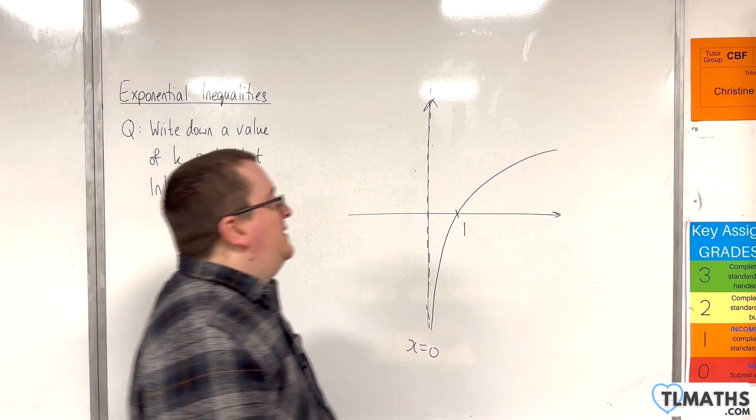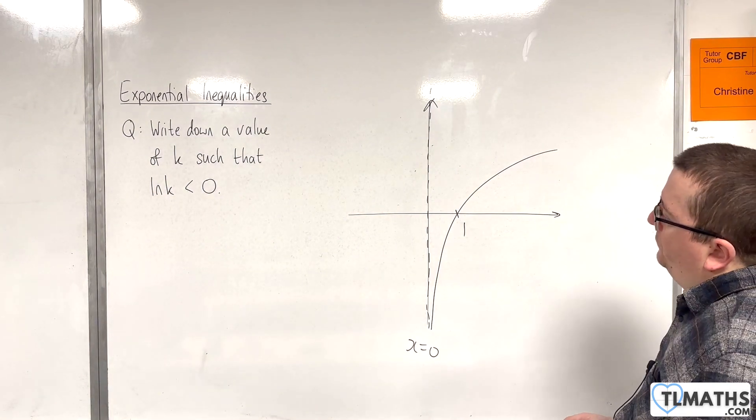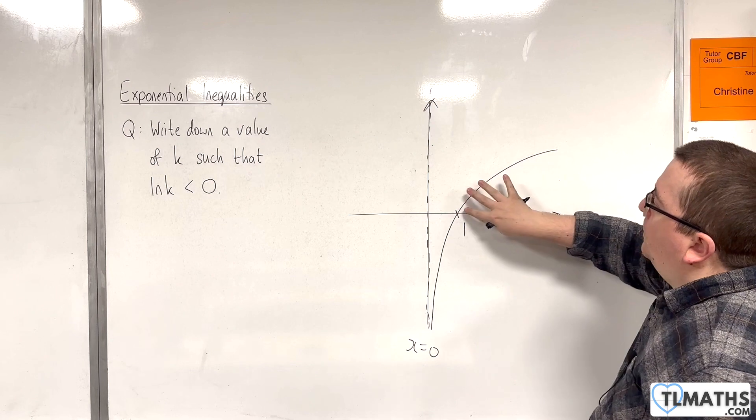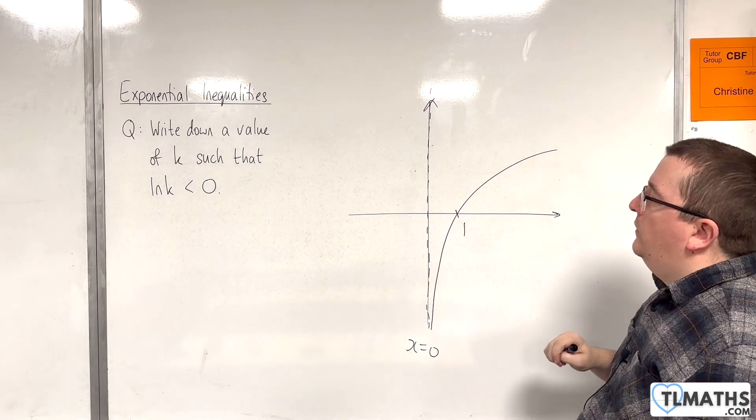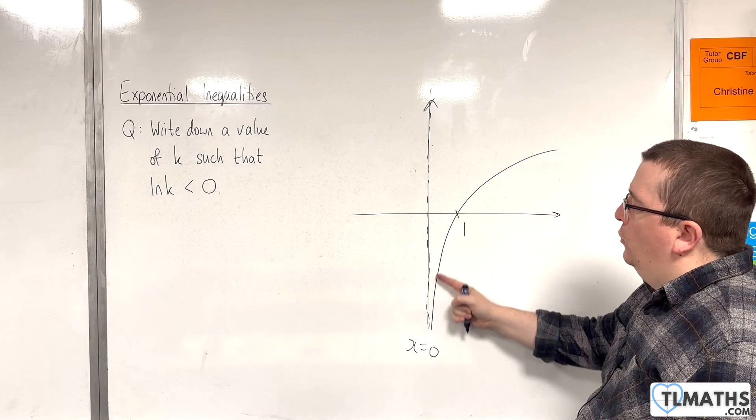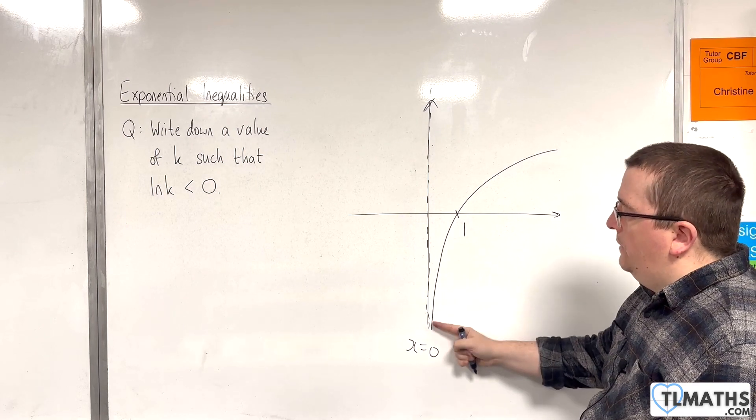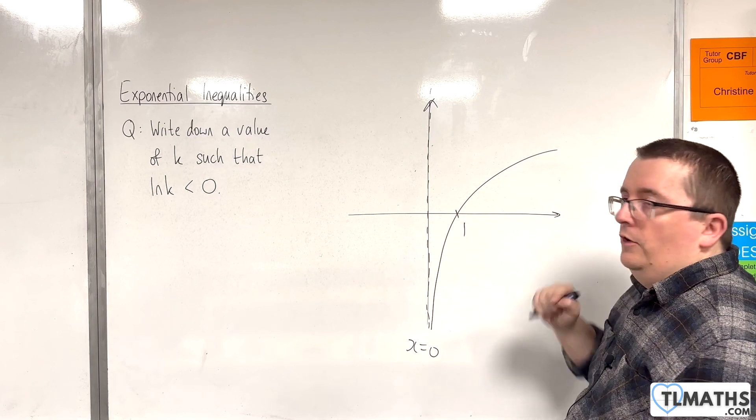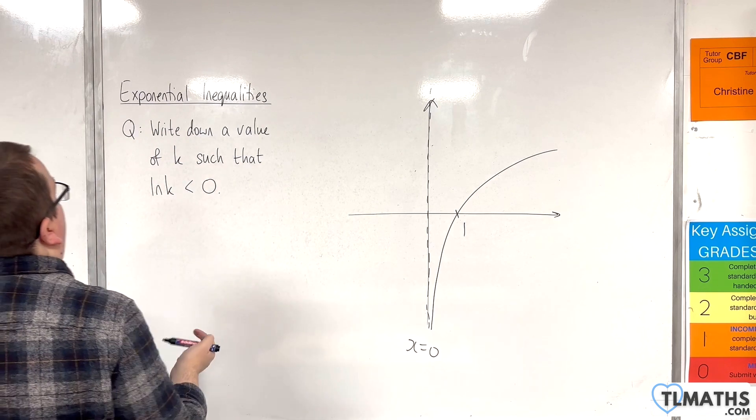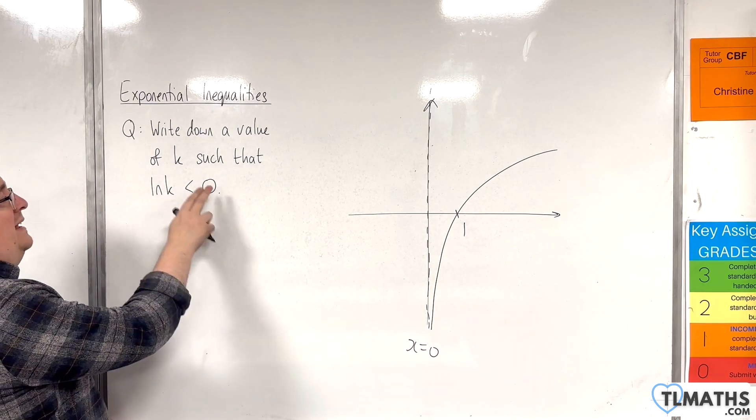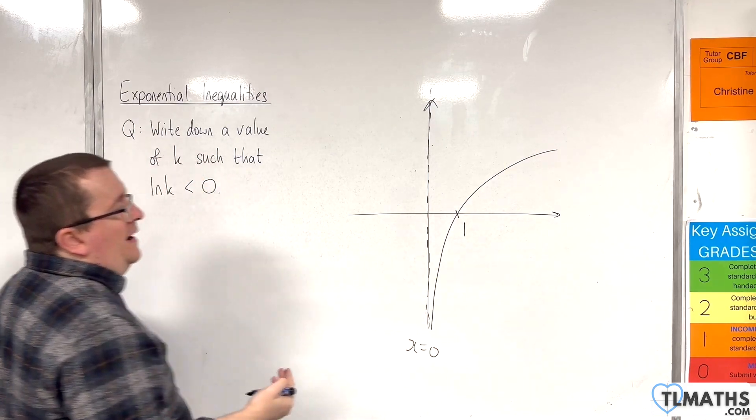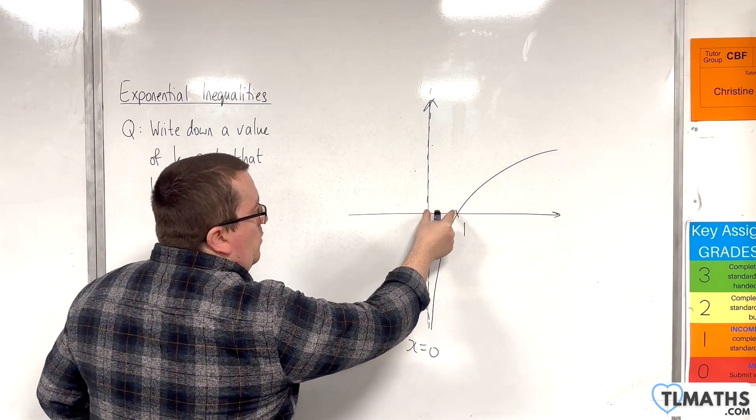Now, if this is the graph of log x, then you can see that it is positive. So, it is above the x-axis here when x is greater than 1. And it is below the x-axis, so negative, when you're between 0 and 1. So, write down a value of k such that the natural log of k is less than 0. It's negative when you substitute in a value between 0 and 1.